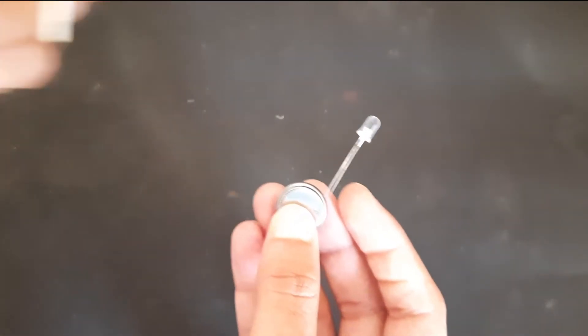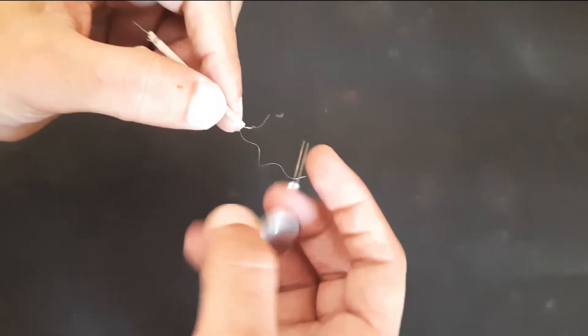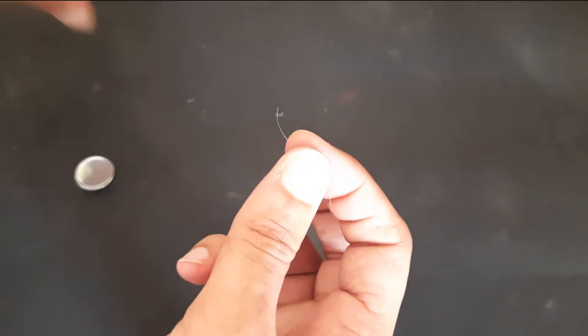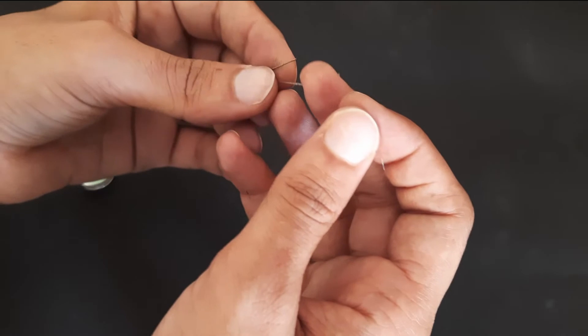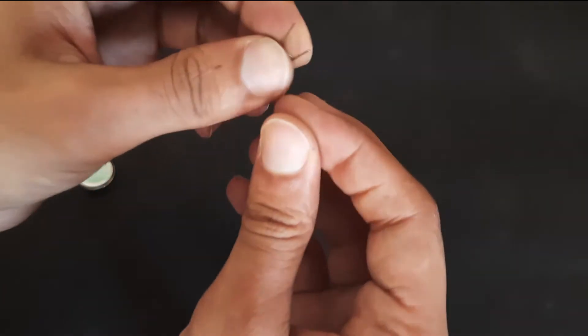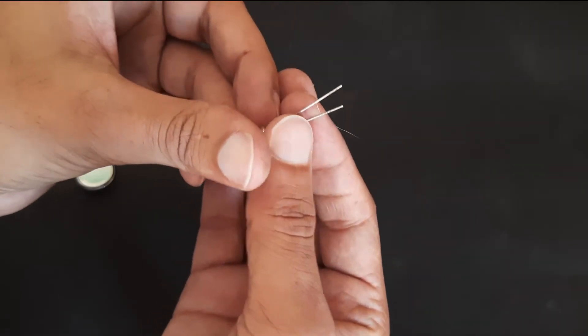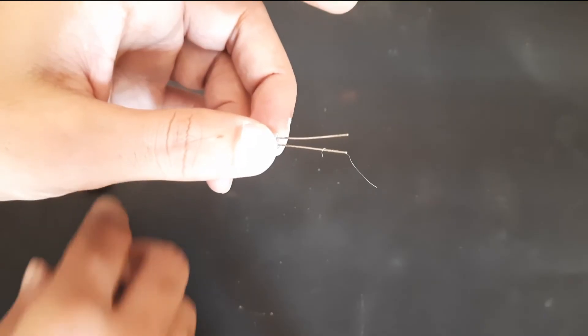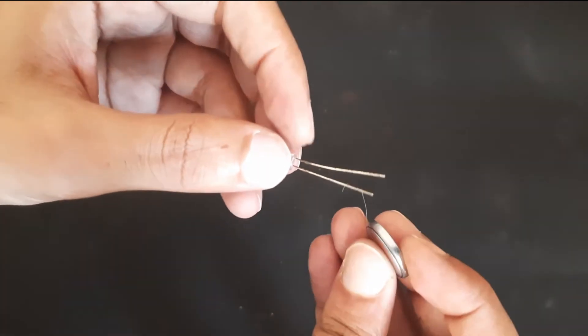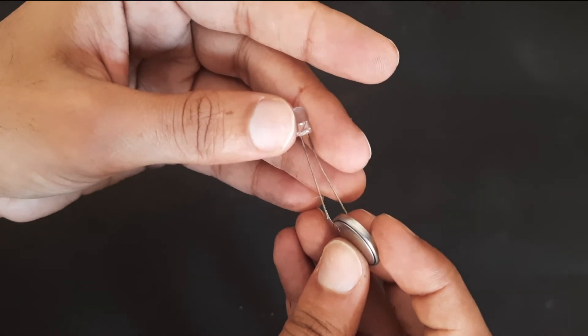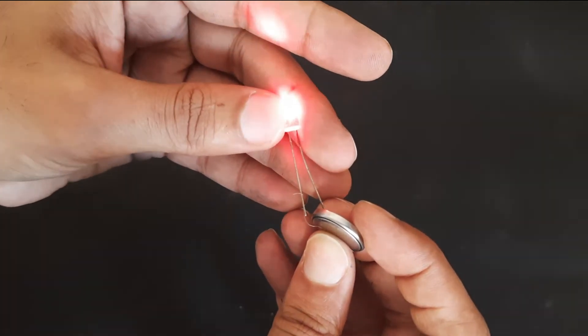Now I will show you its conductivity by connecting a nichrome wire between the LED and a battery. So as you can see, it glows bright as it needed to be. But if it was a bad conductor, the LED would be dull or not even lit up.